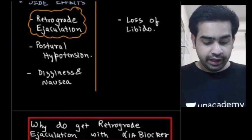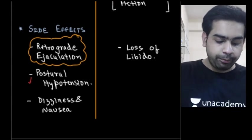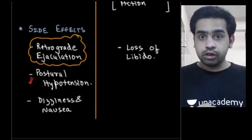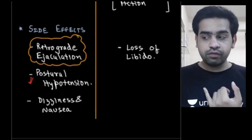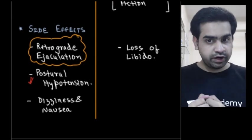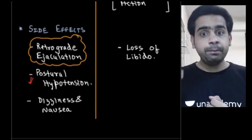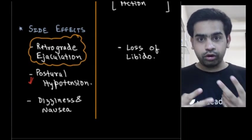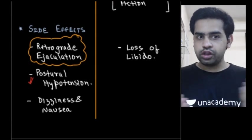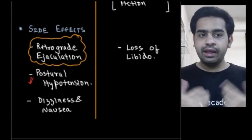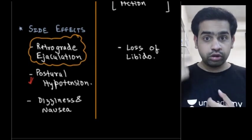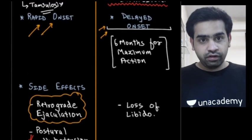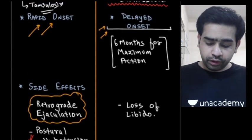Other side effects of alpha blockers: postural hypotension, especially with non-selective alpha blockers, because alpha-1b receptors are present on blood vessels. In elderly patients, postural hypotension is dangerous. There can also be dizziness and nausea as central side effects. With 5-alpha reductase inhibitors like finasteride, the main side effect is loss of libido, because DHT levels reduce.